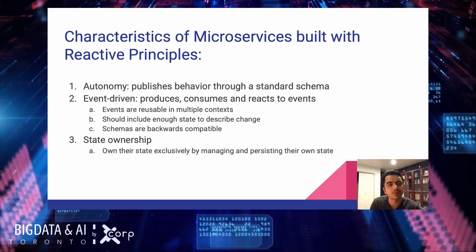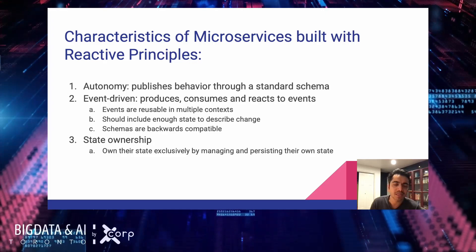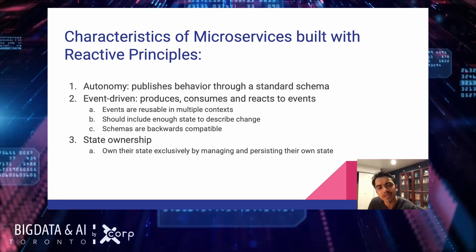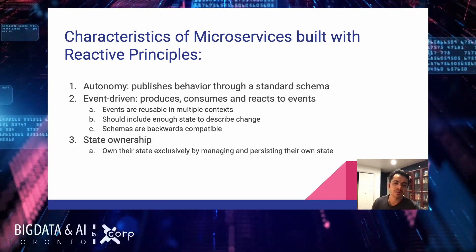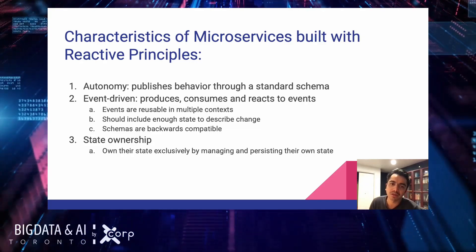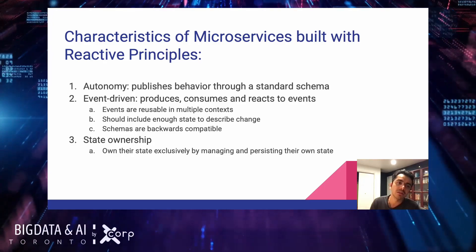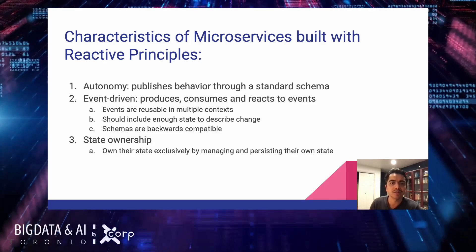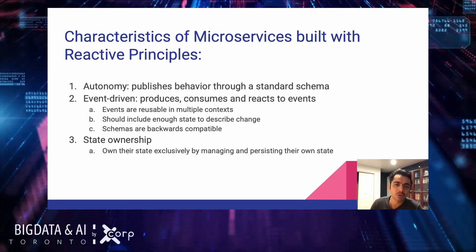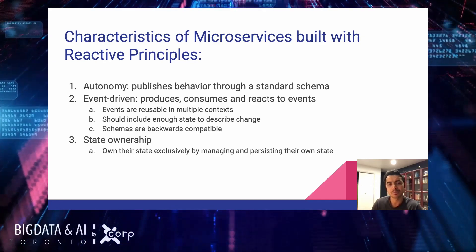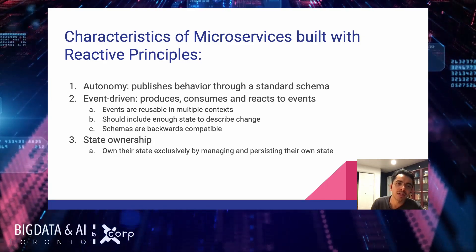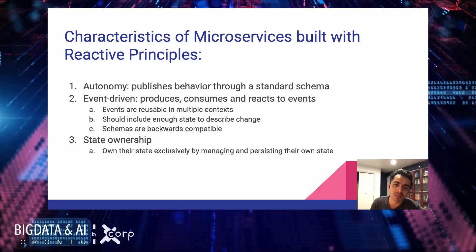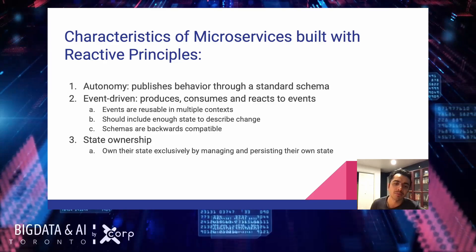For these events, the requirements are that they're reusable in multiple contexts — a cart add is a cart add is a cart add. Different downstream applications may want to use different parts of the information, but the ask is to publish all state useful for these contexts as one consistent event. They should include enough information to describe the state and the change to state, and schemas should be backwards compatible. Lastly, ownership of state within the application: systems should own their states exclusively by managing and persisting their own states — internal databases are strictly for internal use, and any downstream processing happens through published events.